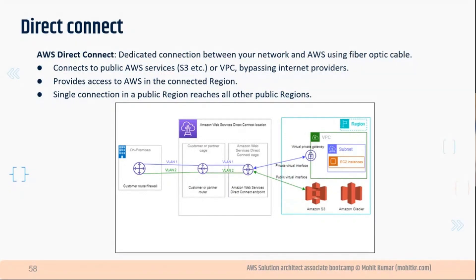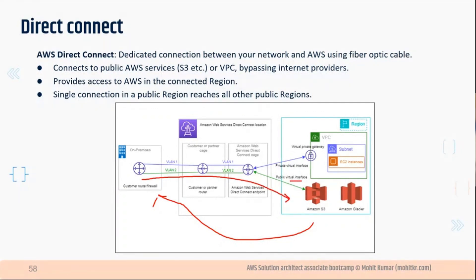Can we use S3 and Glacier services over Direct Connect? Yes — there are two ways to send traffic: over the public internet, which is slower, or over the Direct Connect lease line for better throughput. For the lease line option, you need a Public Virtual Interface, where you specify the IP addresses via prefix lists and expose them. The traffic will then go through the lease line and you can get 1G or 10G provisioned bandwidth depending on your requirement.